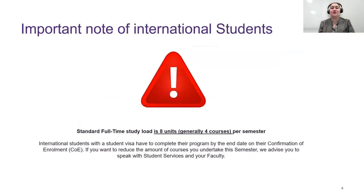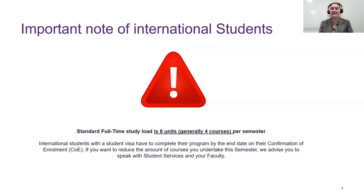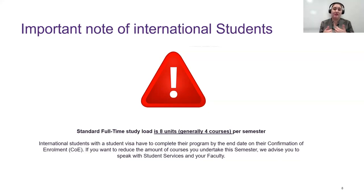An important note for international students: the full-time study load is generally eight units, which is four courses. International students on a student visa must complete their program by the end date of their COE — confirmation of enrollment. If you want to reduce the number of courses you take this semester, do not just unenroll — you really need to talk to someone. Please speak to student services and your faculty, because under-enrolling without advice risks complications with your visa.